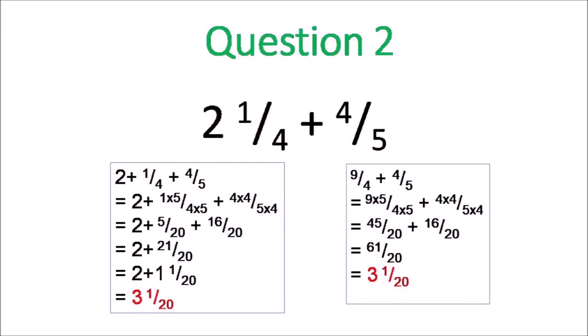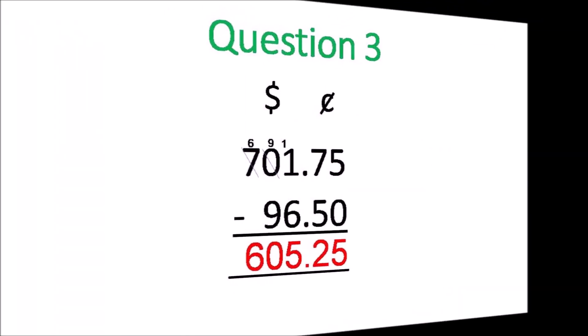Question 2. Two ways to do it. So you can say 2 and then add your fractions. Or you can change to an improper fraction and then add. Both ways you do it. I would prefer you change to an improper and add. You get 3 and 1 twentieth. Whichever way you do it.